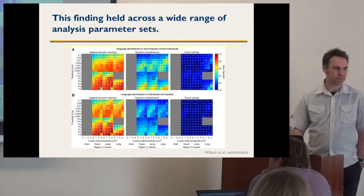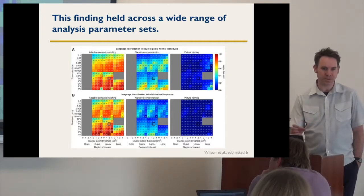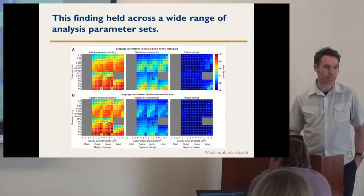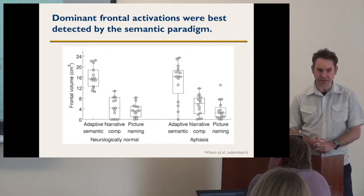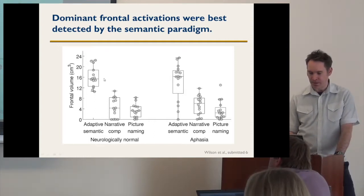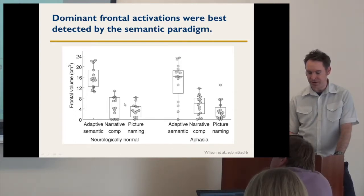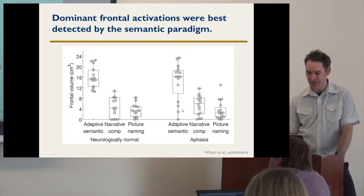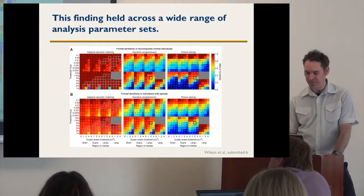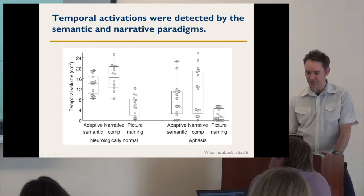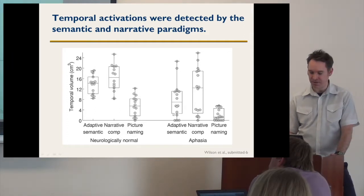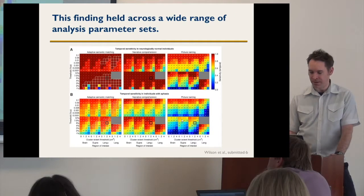It's a block design: language, perceptual, language, perceptual. In terms of temporal region activation, the semantic paradigm and narrative do a fine job of identifying those reliably; picture naming less so. In aphasia, most people continue to have those activations — some don't when the area in question is damaged, and that's not a validity problem. Frontal regions were reliably activated by the semantic paradigm but less so by the other two paradigms — this was true in aphasia too, though of course some people with aphasia did not activate frontal regions because they don't have them. These findings hold across parameters.